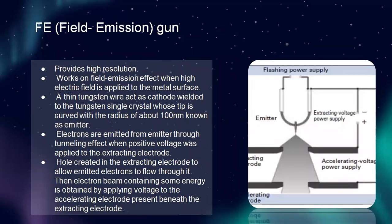The second type is the field emission gun, which provides high resolution work based on the field emission effect. When a high electric field is applied to the metal surface, a thin tungsten wire acts as cathode welded to a tungsten single crystal whose tip is curved with a radius of about 100 nm, known as the emitter. Electrons are emitted from the emitter through the tunneling effect when positive voltage is applied to the extracting electrode. A hole is created in the extracting electrode to allow emitted electrons to flow through it. An electron beam with a certain energy is obtained by applying voltage to the accelerating electrode beneath the extracting electrode. In the diagram: extracting voltage power supply, accelerating voltage power supply, and emitter.